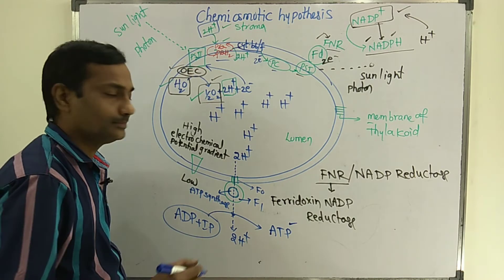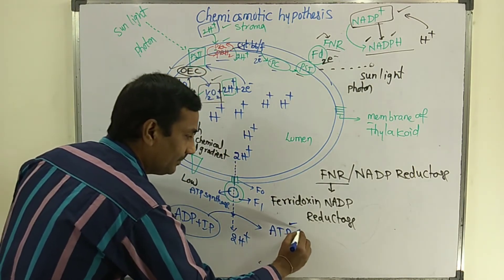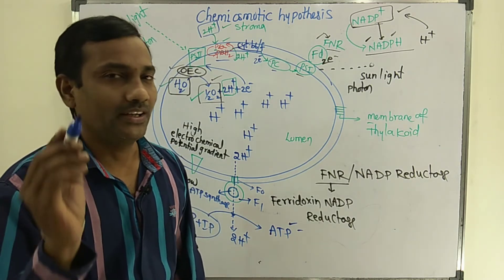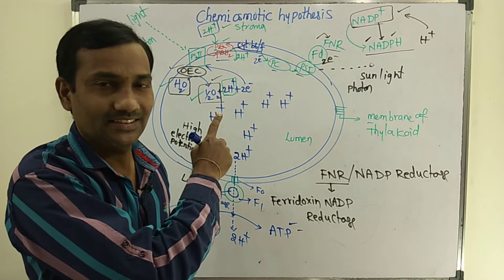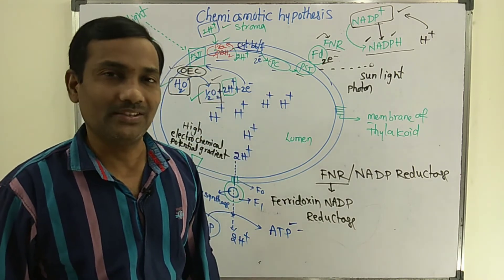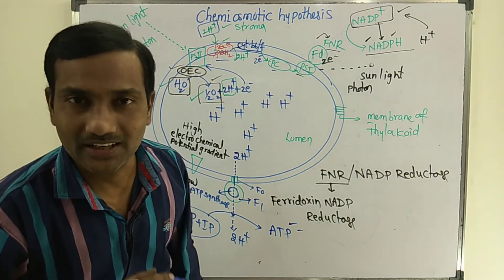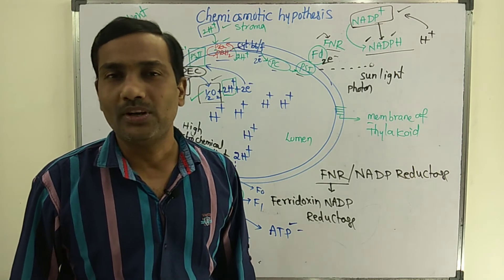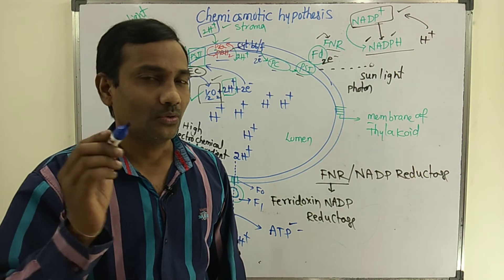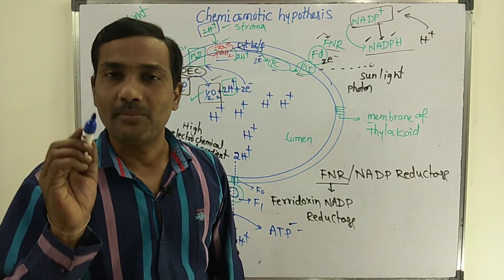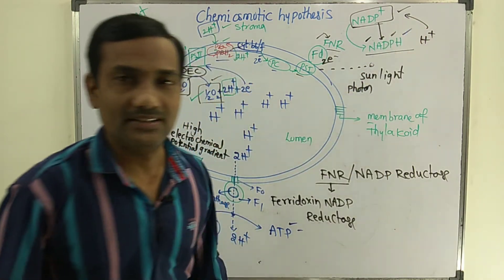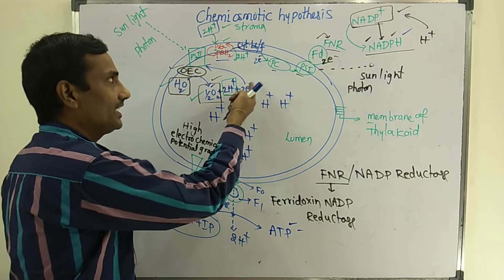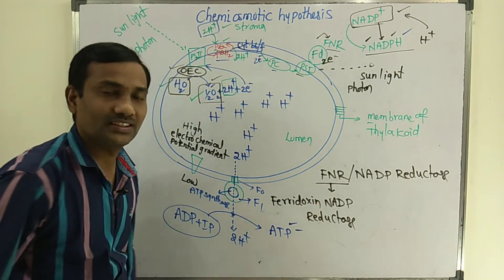In this concept, we understand that the Chemiosmotic Hypothesis explains ATP formation like this in the chloroplast, as explained by Peter Mitchell. The most important thing is that it is related to the light phase only — light reactions or photochemical reactions. The Z-scheme pathway, along with the Chemiosmotic Hypothesis, helps in synthesis of ATP. Three important products are formed during the light phase: NADPH — formed in the stroma region; oxygen — liberated because of splitting of water; and ATP — synthesized through chemiosmosis.